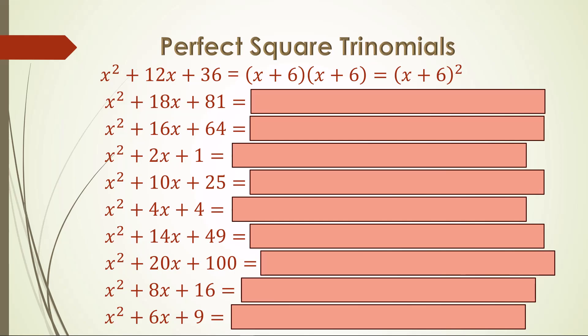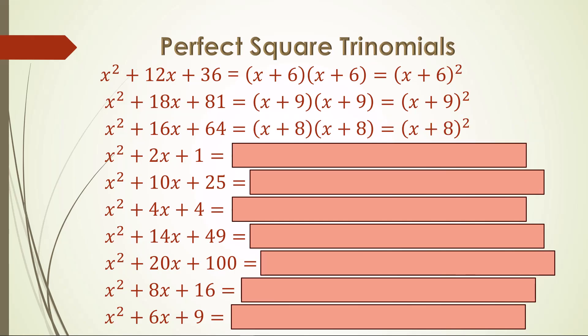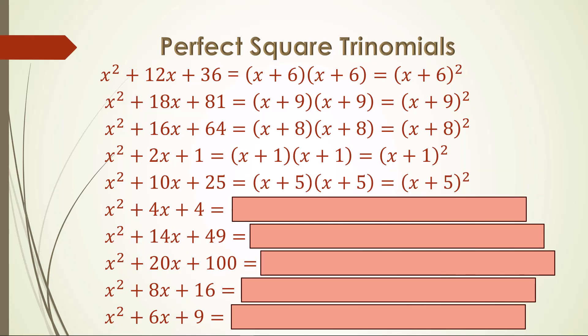For the next one, half of 18 is 9, which is also the square root of 81, and so x plus 9 is the square root of this one. Half of 16 is 8, also the square root of 64, and so x plus 8 is the square root binomial. Half of 2 is 1, and the square root of 1 is 1, and so x plus 1 is the answer. The next one is x plus 5, since 5 is half of 10 and the square root of 25.